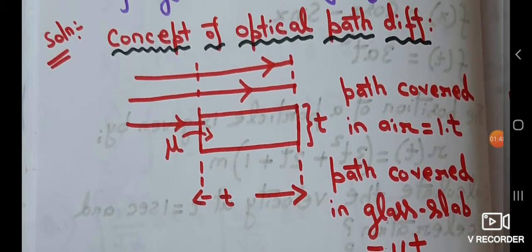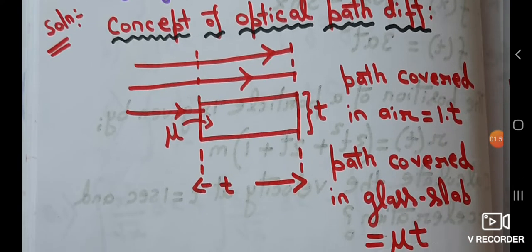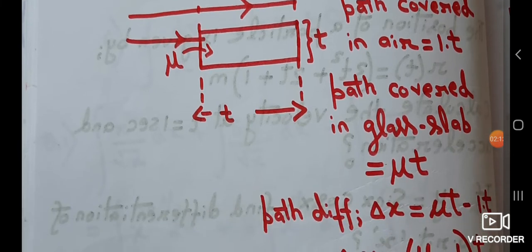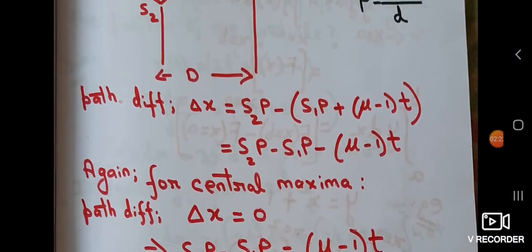This concept is very important. If light passes through air, the path covered is given by the refractive index of air multiplied by the distance. If the light wave passes through a medium such as a glass slab, it is the refractive index of the glass slab, mu, multiplied by the distance covered. The path difference is simply the subtraction of the two paths, which gives (mu − 1)·t.